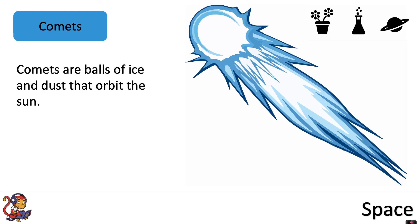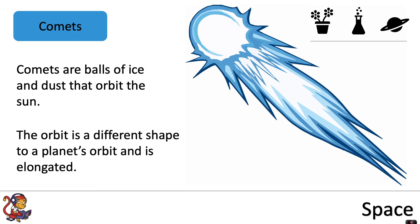Some other objects that we find in space then. We find comets which are balls of ice and dust that orbit the Sun. The orbit is a different shape to a planet's orbit and it's elongated.